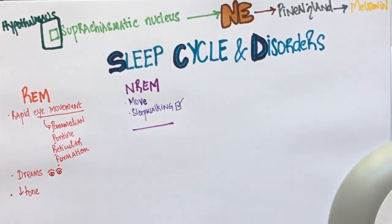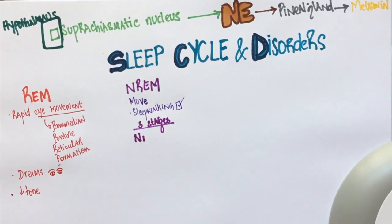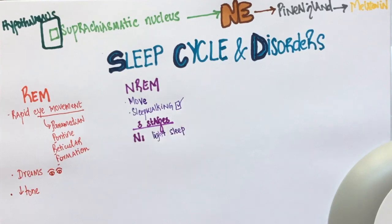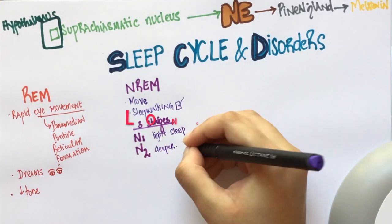NREM sleep has three stages. N1, N2 and N3. N1 is light sleep. It is relatively easy to wake a person up in this stage. N2 is deeper sleep. This is the longest stage of our sleep cycle.